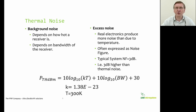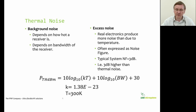One of the limits on the sensitivity of a receiver is the thermal noise floor of the system. This is partially determined by how hot the receiver is, and partially by excess noise produced by the electronics. Typically it's about minus 174 dBm per hertz for a real RF system. A radio receiver such as the LimeSDR would typically produce a couple of dBs of excess noise, corresponding to a noise figure of about 2 or 3 dB.